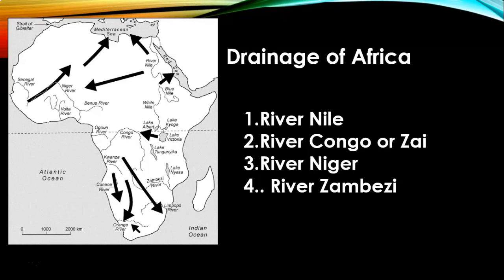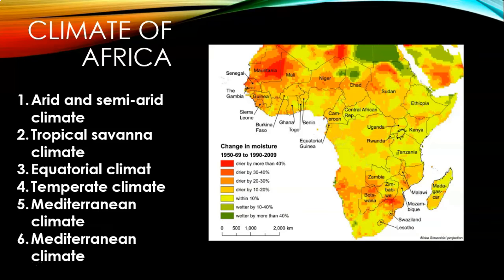Climate. Africa is divided into six major climatic zones: arid and semi-arid climate, tropical savannah climate, equatorial climate, temperate climate, Mediterranean climate, and tropical monsoon climate. Tropical deserts are located between 20 and 30 degrees north and south of the equator on the western margin of the continent. The desert lies in the belt of the trade winds, which flow from northeast in the northern hemisphere and southeast in the southern hemisphere. The general direction of the trade winds is from east to west. These winds shed their moisture on the eastern margin of the continent, and by the time they reach the west, they lose their moisture.